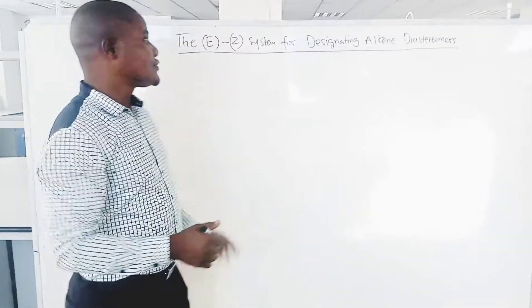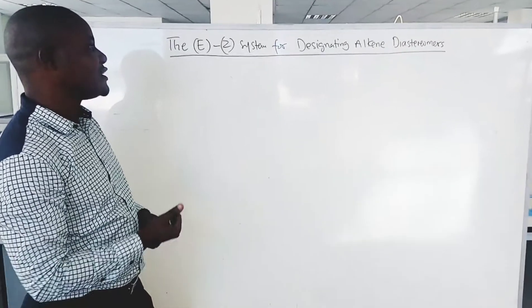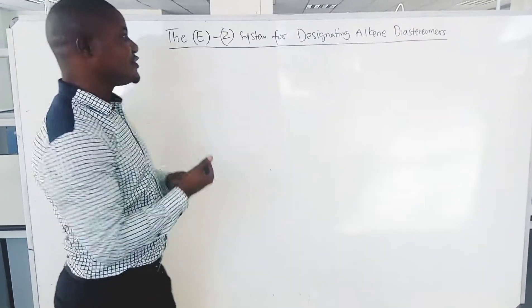Hi, in today's tutorial we shall look at the E-Z system for designating alkene diastereomers.